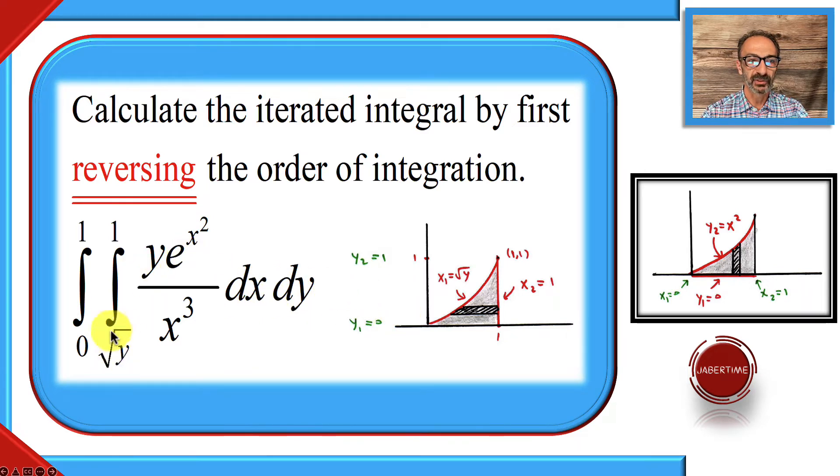The graph of the region says we are going from x equals square root of y, that's this right here, to x equals one, and from y equals zero to y equals one. This is the graph. But reversing the order, instead of going from x1 to x2, we're going to go first from y1 to y2. That will make a big difference.